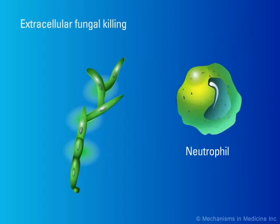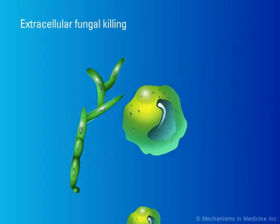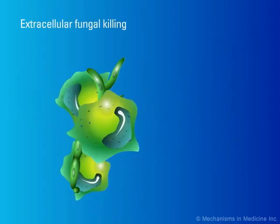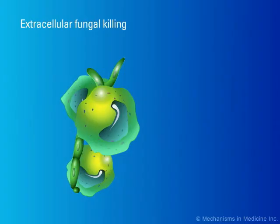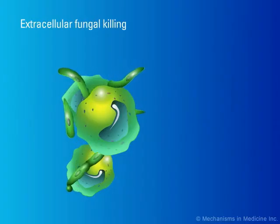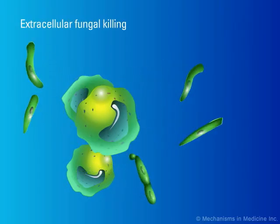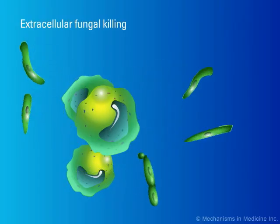Neutrophils also attack extracellular fungi by spreading over hyphae. This provides an additional mechanism for the immune system to damage and kill fungal targets, such as hyphae, that are too large for phagocytes to ingest.